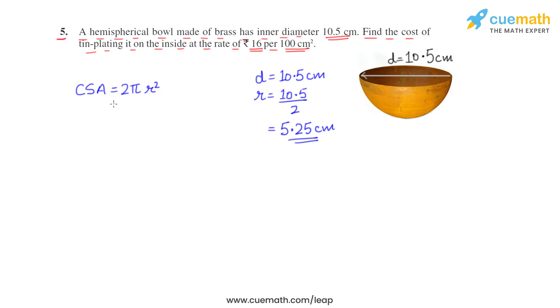Let's put it here in the formula. It will be 2 times 22/7 times 5.25 whole squared. This comes out to be 173.25 square centimeters. So this is the curved surface area of the inner part that needs to be tin plated.